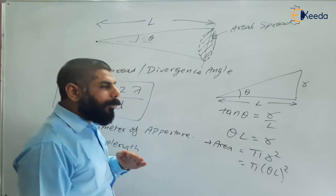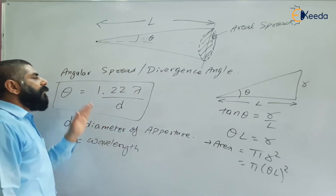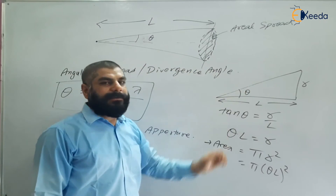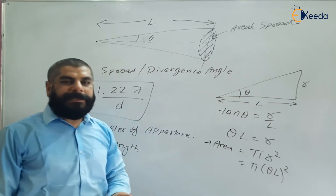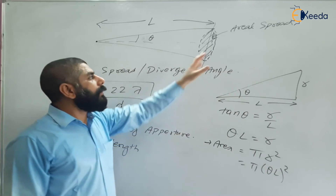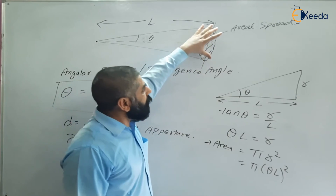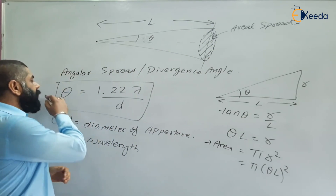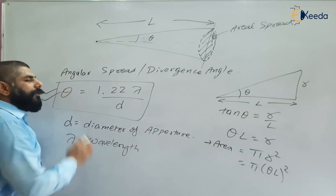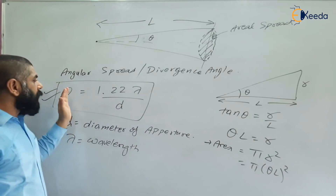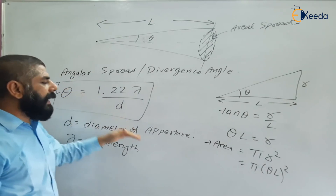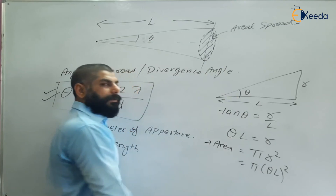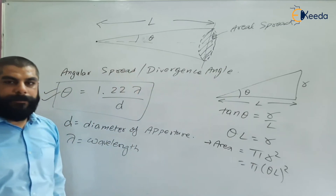So two things to remember: first, the angular spread (divergence angle) θ = 1.22λ/d; and second, the area spread of the circular spot A = π(θL)². Remember these two formulas. Thank you.